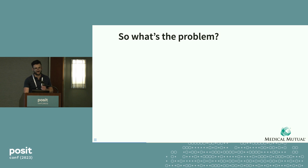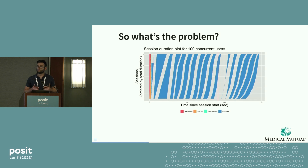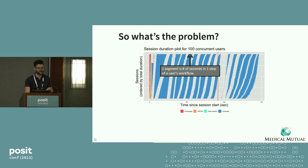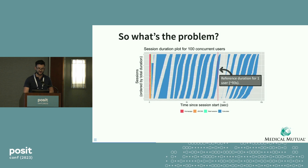That problem is underscored by this plot. For those not familiar with load testing tools for Shiny, this plot may be a little opaque, so let's break it down. This is what's known as the session duration plot, and it's showing 100 simulated users using the Shiny app. The ticks along the Y axis represent simulated users as they go through the workflow. Each segment stretching across the X axis is the amount of time that a particular step in that user's workflow took. There's a red line that indicates how long the total workflow took for a single concurrent user — about 93 seconds.